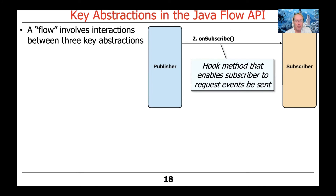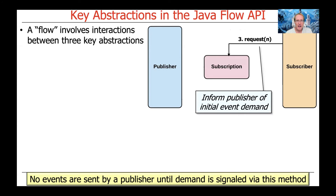Once a subscriber subscribes, it passes itself in, and then the onSubscribe method is called back by the publisher, enabling the subscriber to start requesting events. It would then say, I would like events, please — you can indicate how many you want: one event at a time, ten events at a time, or a max value like max long, which will send basically an infinite number of events until something changes, like an error callback or a completion callback. But nothing is sent until the request is triggered.